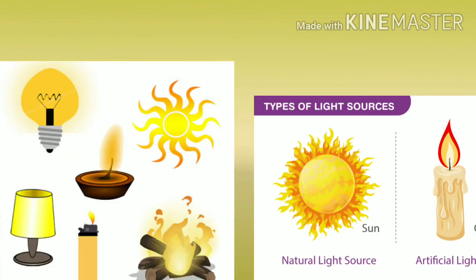हमें दो तरह से light मिलती है — एक natural light source और एक artificial light source. Natural मतलब जो nature से मिलती है, जैसे sunlight — वो natural light source होती है. और artificial light source में — जैसे candles, bulb, lamp, battery, flashlight, fire — यह सब artificial light में आएंगे. Other examples: electrical bulb, lamp, दिया, burning coal — यह सब artificial light में आएंगे. याद रखना — दो types होते हैं light source के: natural light source और artificial light source.